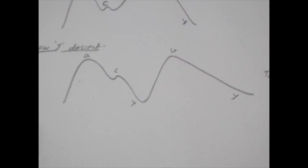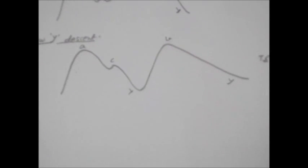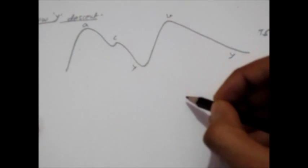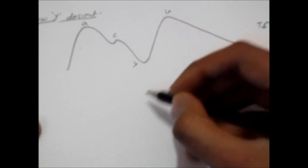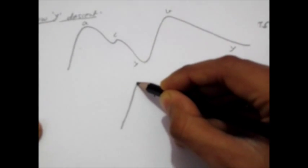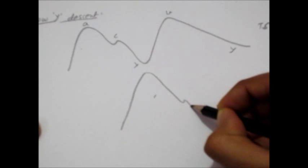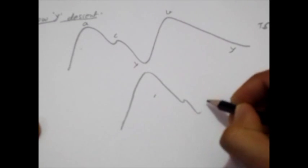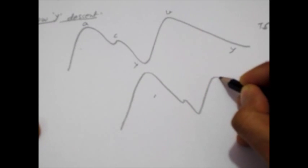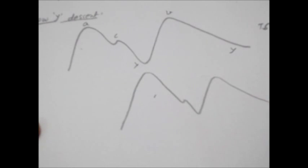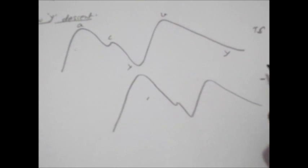So what do we see in tricuspid stenosis? In tricuspid stenosis, we see a giant A wave and a slow Y descent.